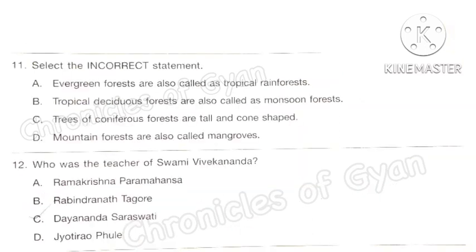Question 11: Select the incorrect statement. Statement A — Evergreen forests are also called tropical rainforests — is correct. Statement B — Tropical deciduous forests are also called monsoon forests — is correct. Statement C — Trees of coniferous forests are tall and cone-shaped — is correct. Statement D — Mountain forests are also called mangroves — is incorrect, as they are called alpine forests. So the correct answer is option D.